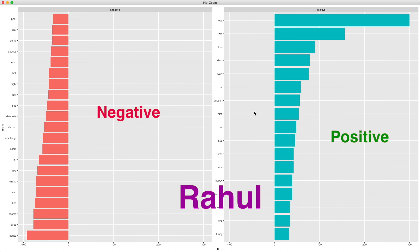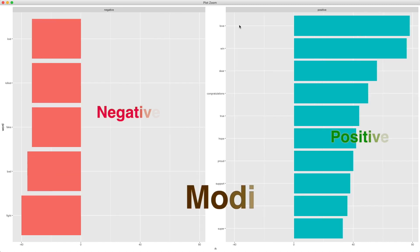This bar plot shows positive and negative words within the original tweets where retweets have been removed. For Rahul Gandhi, the top positive word is 'love' followed by 'win,' and also positive words like 'hug' and 'won.' For negative emotion words, 'abuse' is followed by 'killed,' 'shame,' 'died,' and 'dead,' which is obviously related to former Prime Minister Rajiv Gandhi. For Narendra Modi, the top positive word is also 'love' followed by 'win' and 'congratulations,' while negative words include 'fight,' 'bad,' and 'killed.'